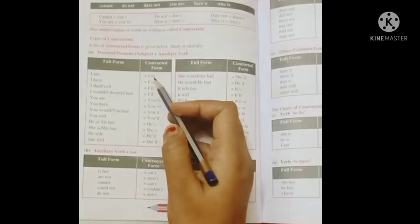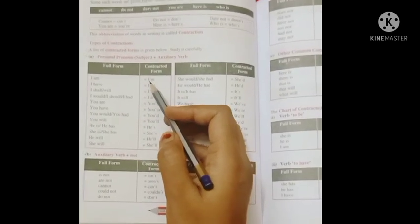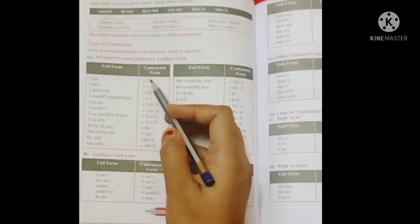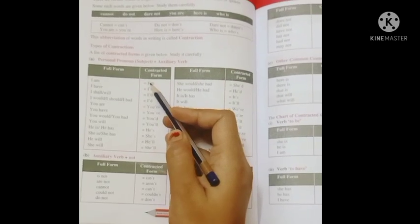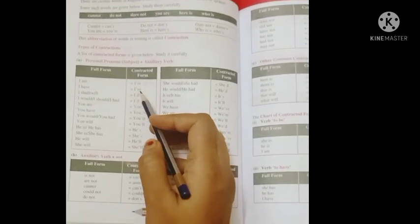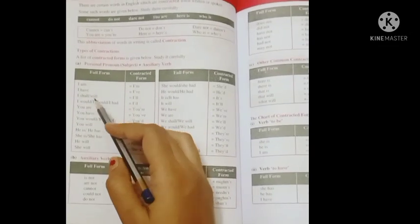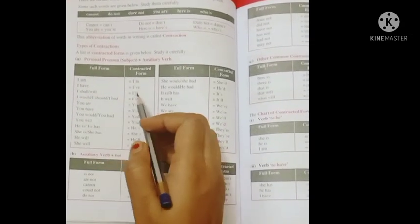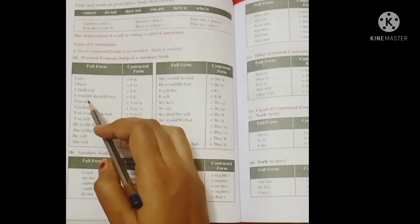I am, I'm. Here, look, the 'a' is silent here and we use an apostrophe here. I have, I've. Here 'h' and 'a' are omitted. I shall or I will, I'll. I would or I should or I had, I'd.